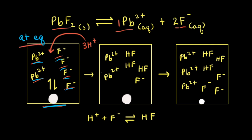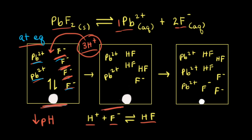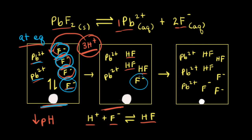To the system at equilibrium, we're going to add some H⁺ ions. By increasing the concentration of H⁺ ions in solution, we're decreasing the pH of the solution. When the H⁺ ions are added, most of them react with the fluoride anions that are present: H⁺ + F⁻ → HF. In the diagram, three H⁺ ions react with three fluoride anions to produce three HF. Notice how the concentration of fluoride anions in solution has decreased from the first diagram to the second diagram because of the addition of H⁺ ions.